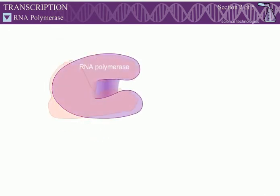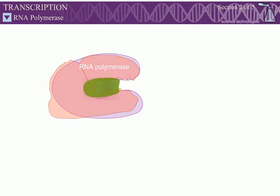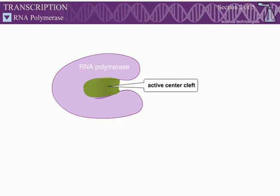Overall, RNA polymerase resembles a crab claw. A channel runs through the enzyme, starting between the two pincers of the claw. The active site is found at the base of the pincers within a region called the active center cleft.